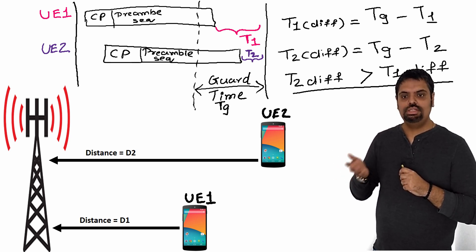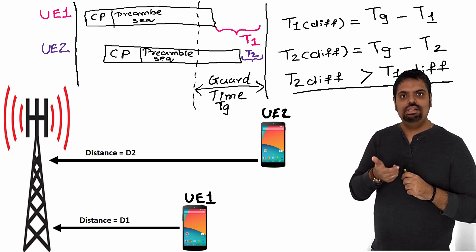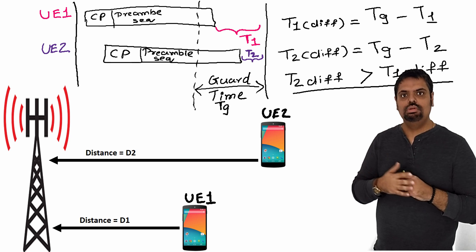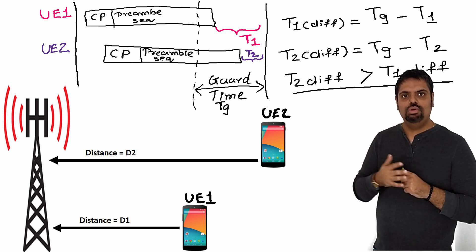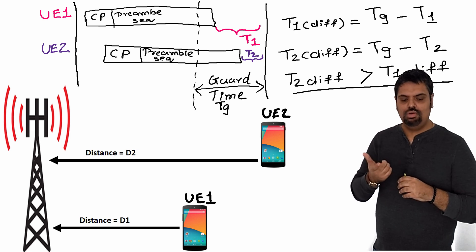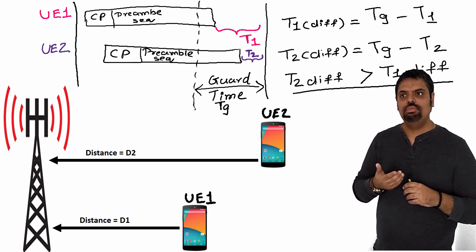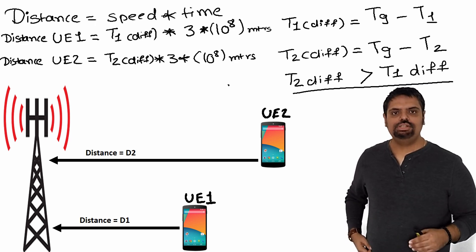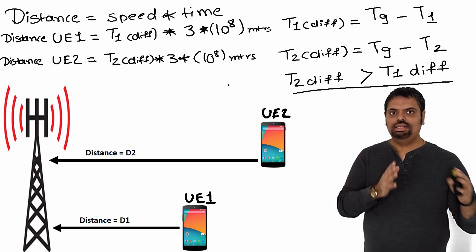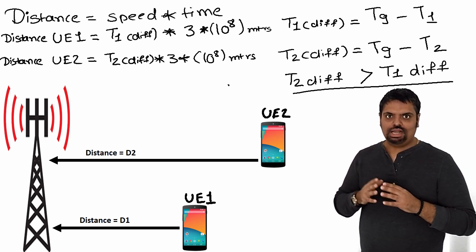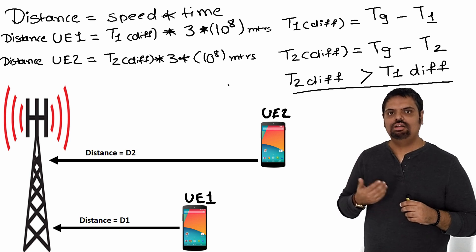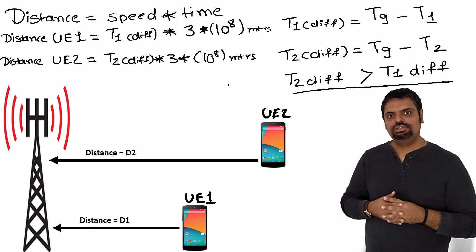As we see in the diagram, when the preamble sequence from the nearby UE reaches the eNB, it comes within the window of the reception of preamble frames and consumes less guard time, whereas UE2, which is farther from the eNB, consumes more guard time. T1 and T2 are the leftover or remaining time of the guard period. From the overall guard time minus the leftover guard time, we get the consumed time — which is essentially the propagation delay — and from this we calculate the distance of the UE.